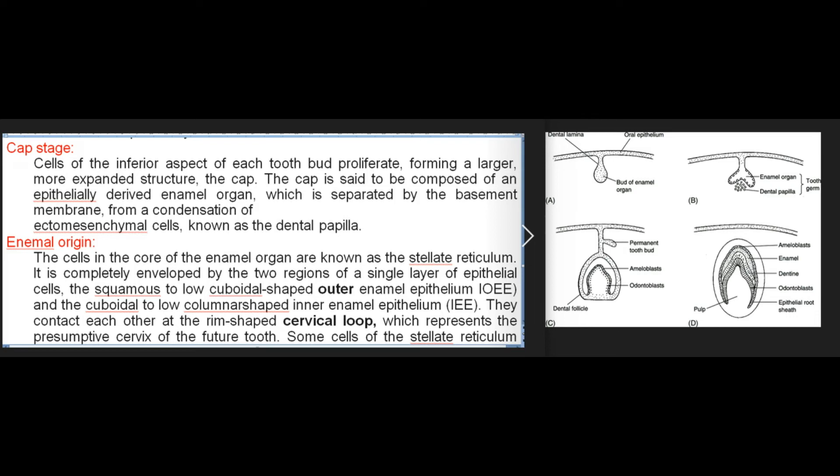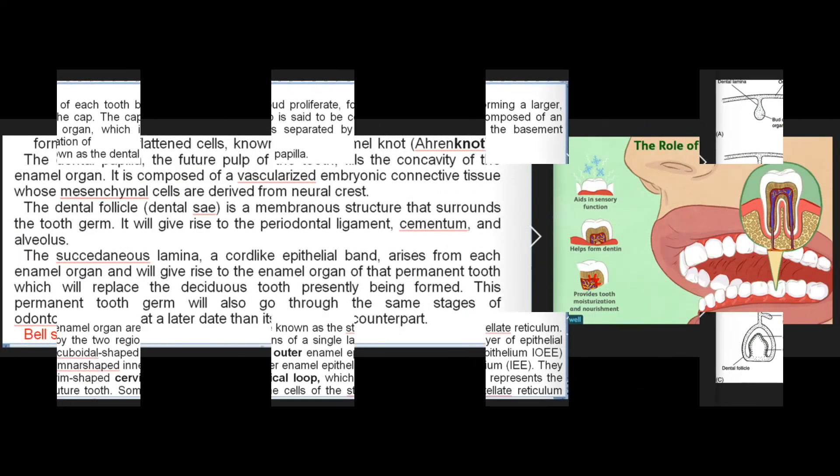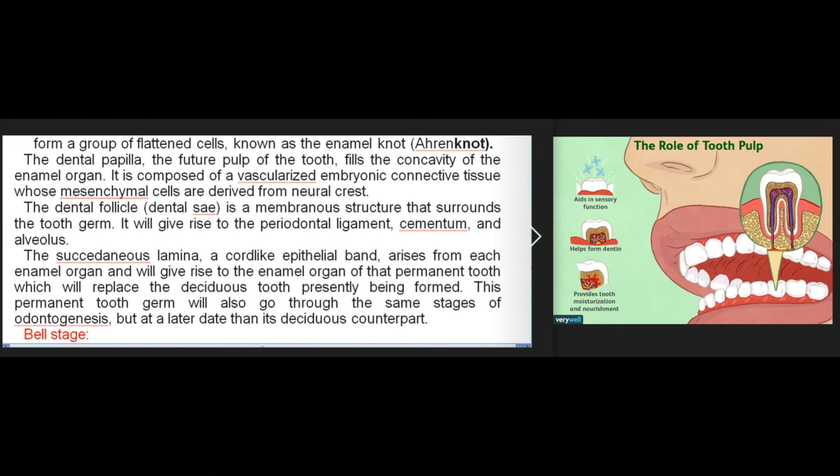The cells in the core of the enamel organ are known as the stellate reticulum. It is completely enveloped by two regions of a single layer of epithelial cells: the squamous to low cuboidal-shaped outer enamel epithelium (OEE) and the cuboidal to low columnar-shaped inner enamel epithelium (IEE). They contact each other at the rim-shaped cervical loop, which represents the presumptive cervix of the future tooth. Some cells of the stellate reticulum form a group of flattened cells known as the enamel knot. The dental papilla — the future pulp — fills the concavity of the enamel organ.